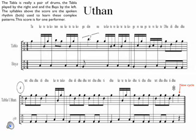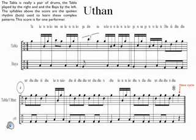Tintal, a metric cycle of 16 beats — itself a square — played by an accompanist, and the distinctive Uttan, a composition of 27 beats performed by the tambour.